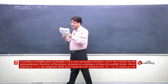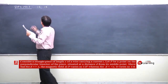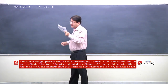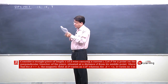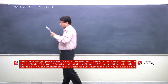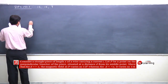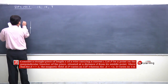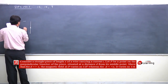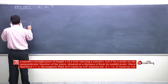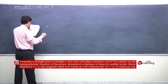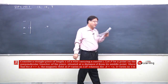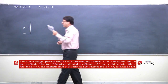Consider a straight piece of wire of length X carrying current I. Let P be a point on the perpendicular bisector of the piece, situated at a distance D from the middle of the wire. The wire has length X, carries current I, and P is a point on the perpendicular bisector.